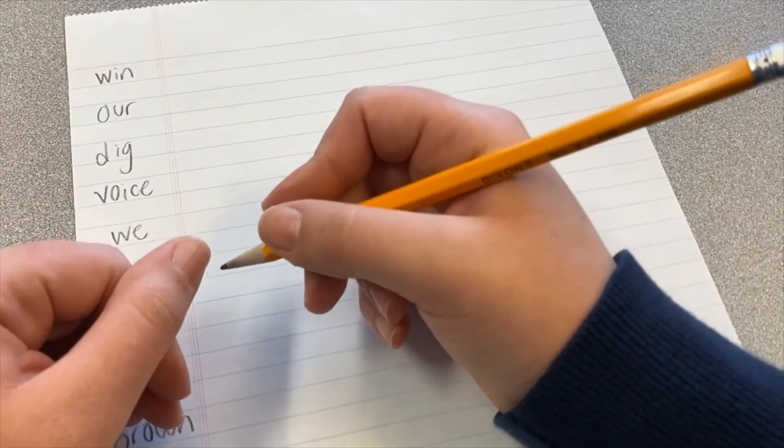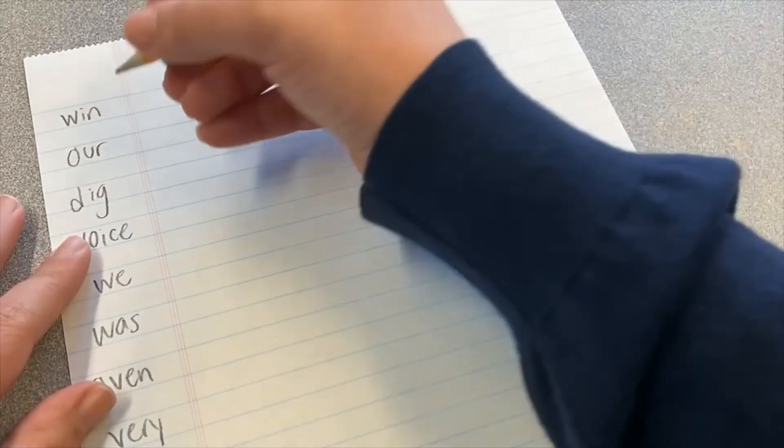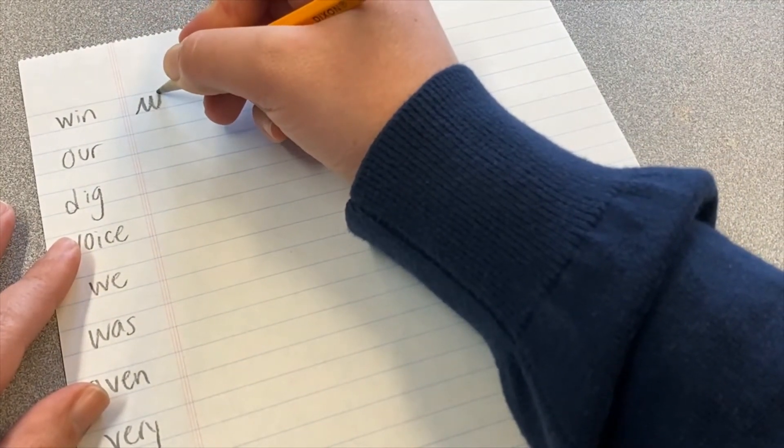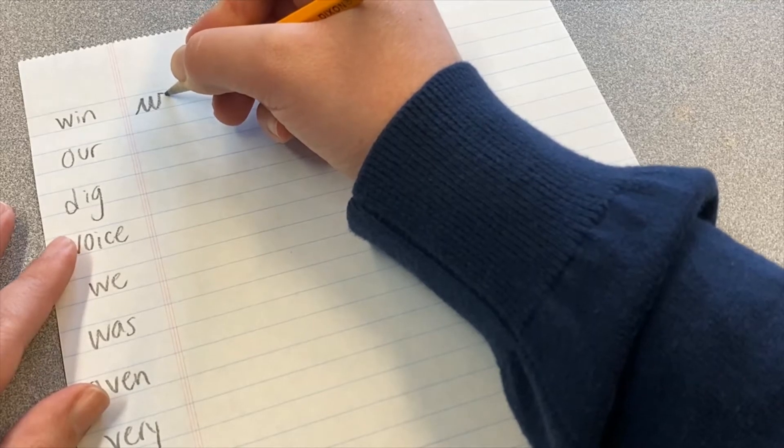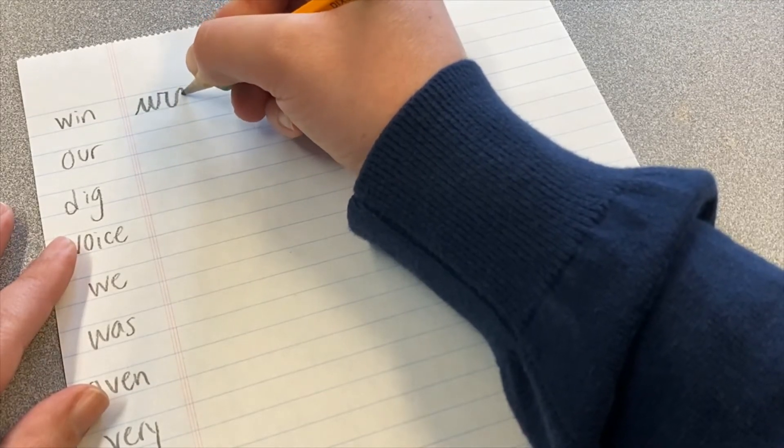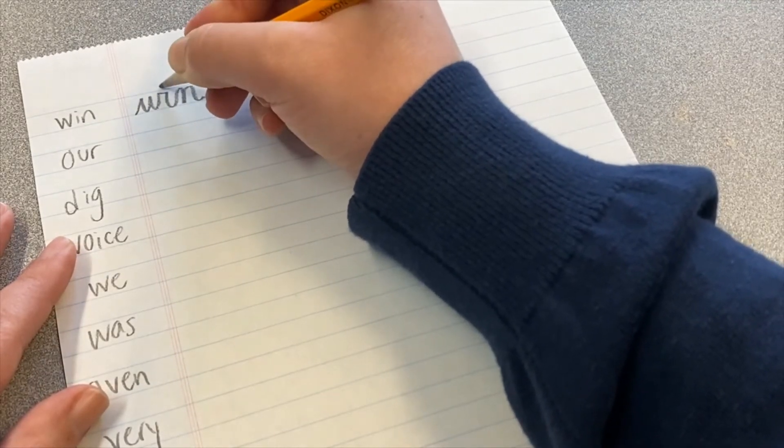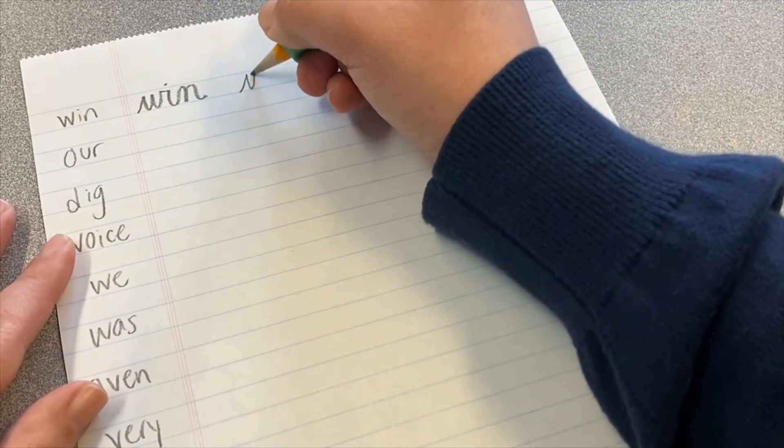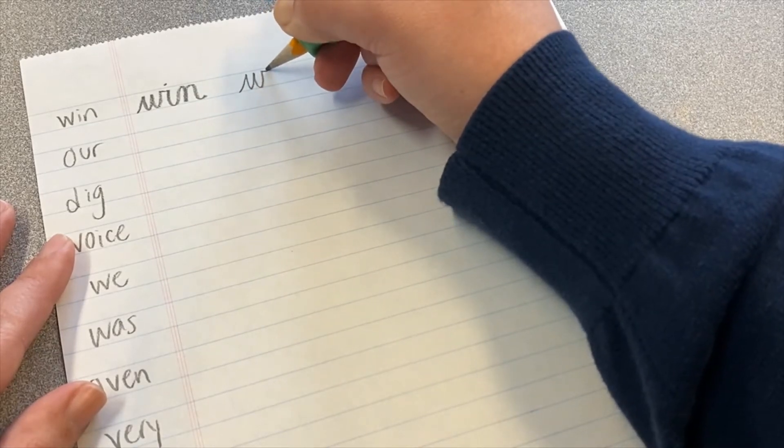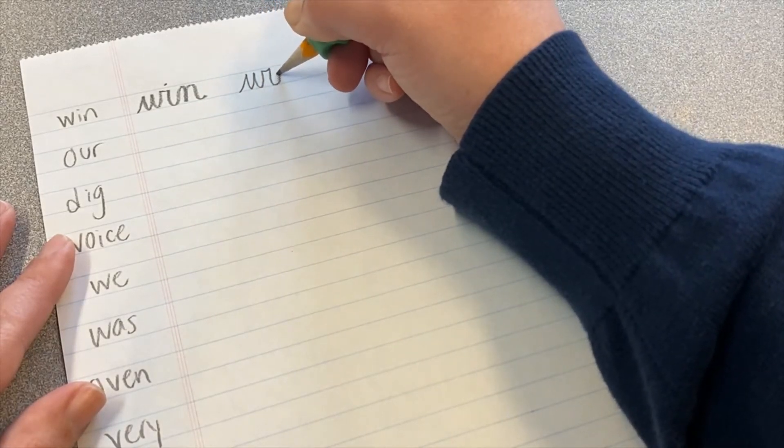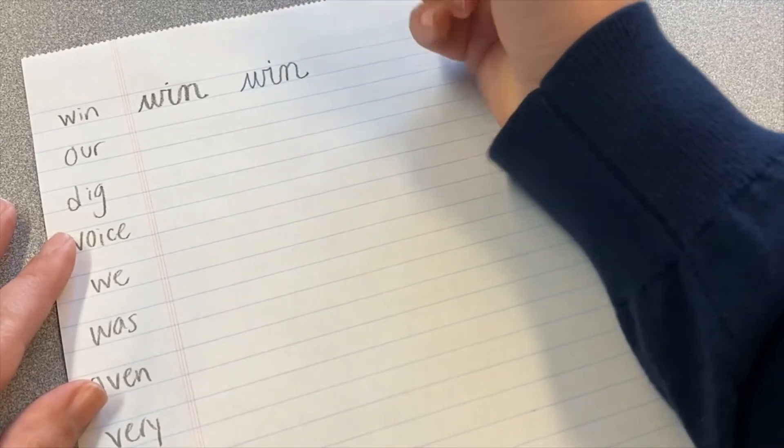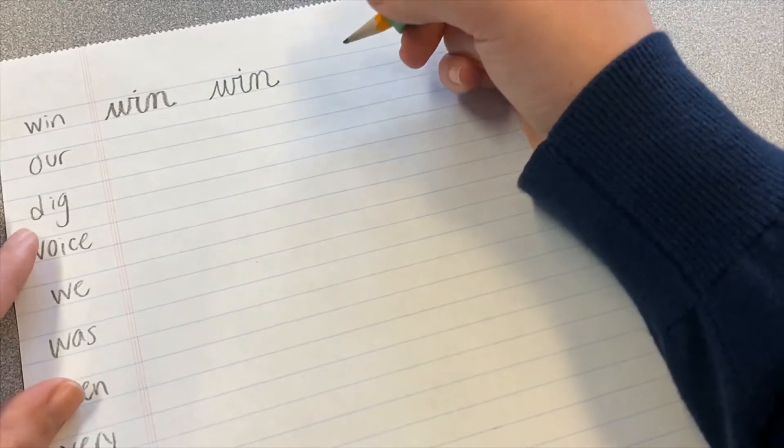First word on our new page will be the word win. So we have our W, over to make the I, and then down. And then right into the N for the word win. And then we dot it at the end. So we did W, we went over, down, connect, into our N, dot it, and we've got the word win.